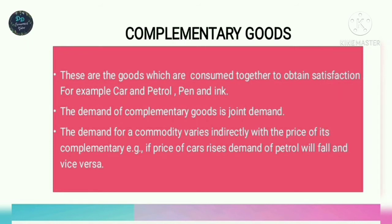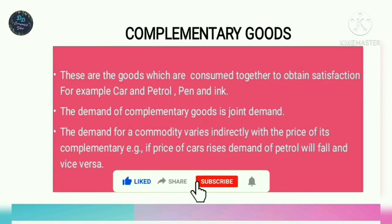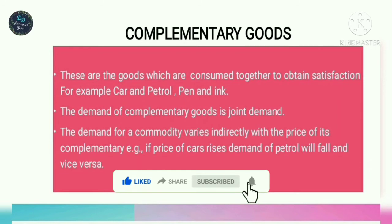So with the fall in price of one good, when demand for that commodity increases, the demand for the related good also increases. For example, if the price of a car falls and its demand increases, the demand for the related good — petrol — will also increase. This is the complementary good.